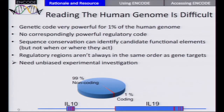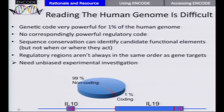Part of the rationale for this project is that reading the human genome is not easy. For protein-coding regions, we have the genetic code — very successful for understanding about 1% of the human genome. But for the regulatory part of the genome, we don't have a corresponding regulatory code where one can simply look at the genome and figure out what parts are functional and what they're doing. Sequence conservation can help identify candidate functional elements, but even then it doesn't tell you what those elements do, when or where they function.